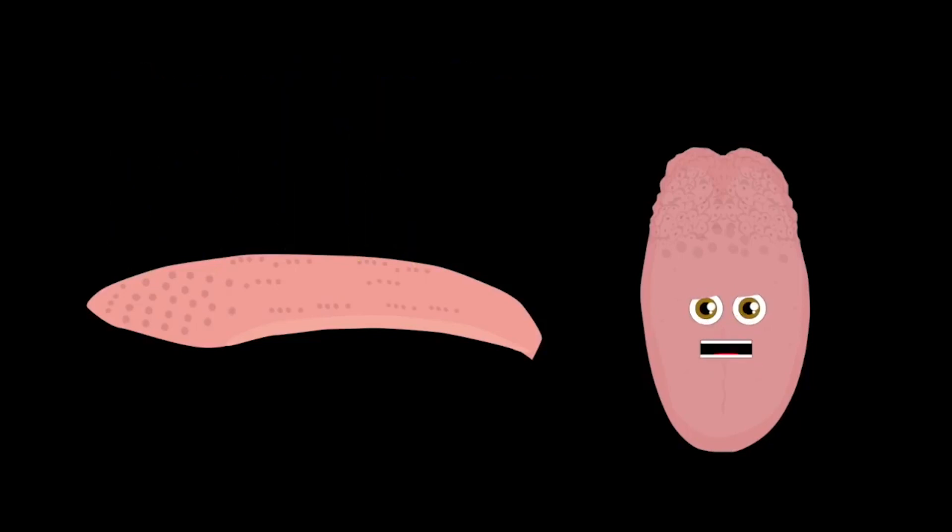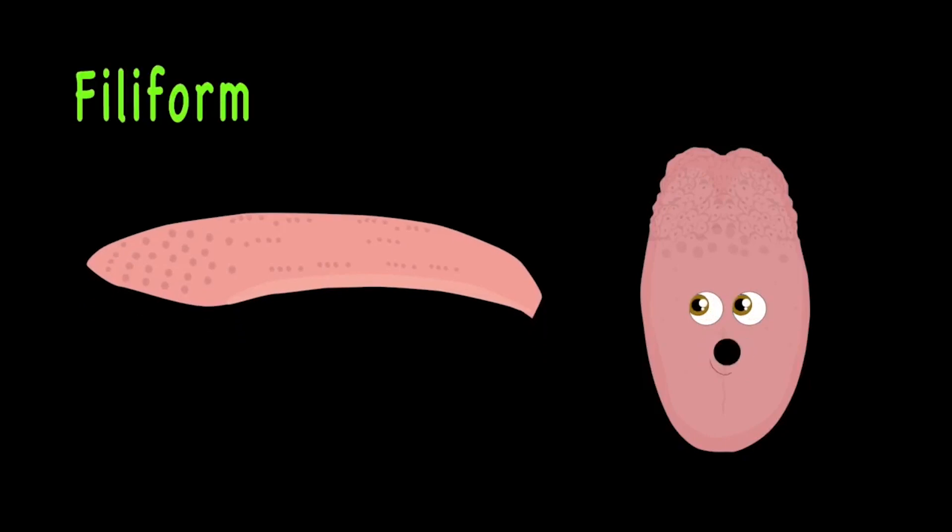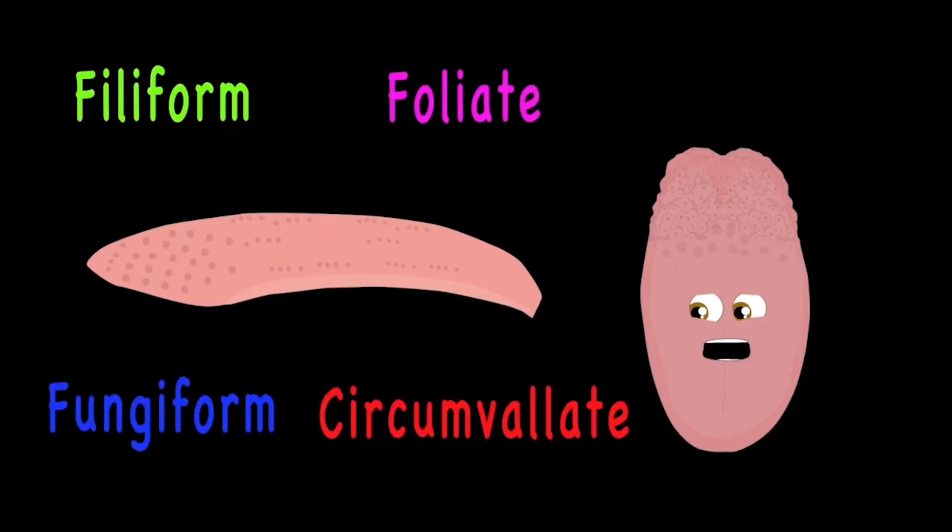There are four different types of your tongue's papillae. They're named the filiform, foliate, fungiform, and circumvallate.